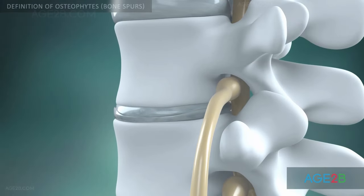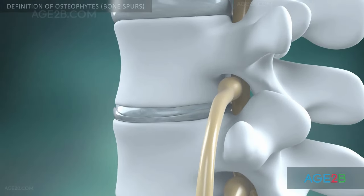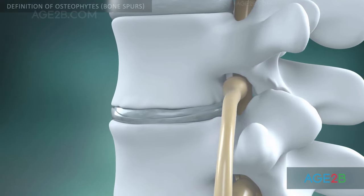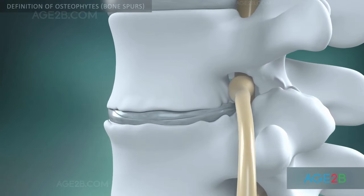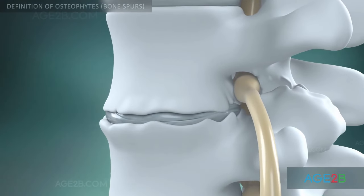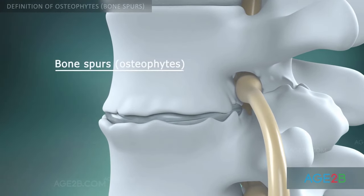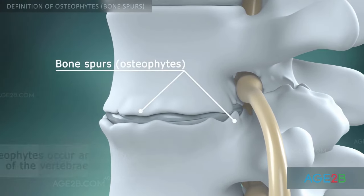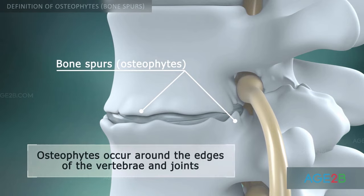Osteophytes, also called bone spurs, are smooth outgrowths that appear around the edges of the vertebrae and on the facet joints.